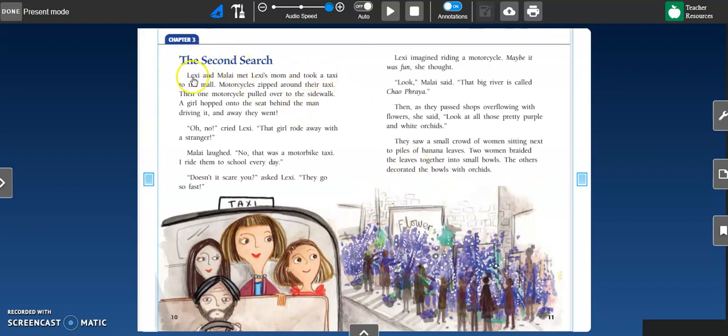Lexi's Lantern, Chapter 3, The Second Search. Lexi and Malay met Lexi's mom and took a taxi to the mall. Motorcycles zipped around their taxi. Then one motorcycle pulled over to the sidewalk. A girl hopped onto the seat behind the man driving it, and away they went.